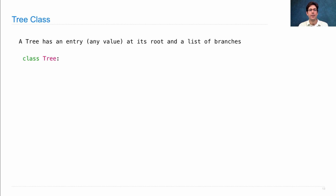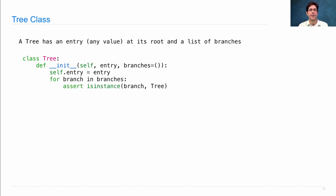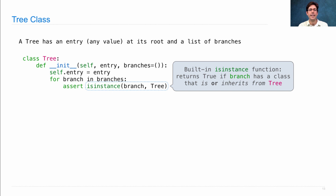We'll start a class called tree and define a constructor that takes an entry and some branches. We set an instance attribute called entry to whatever entry was passed in. We'll also check to make sure that each branch is a tree, because that's the recursive structure of a tree — each branch must be a tree itself. We use the built-in isinstance function, which returns true if branch is either a tree or some other class that inherits from tree. Finally, we set an instance attribute called branches to a list of the branches.